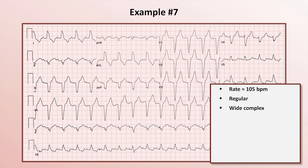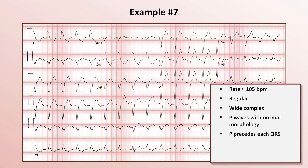Do you see P-waves? Yes — they are most clear in lead 1, but also unambiguous in leads 2 and AVF, and the morphology seems about normal. Each P precedes a QRS, and each QRS follows a P.